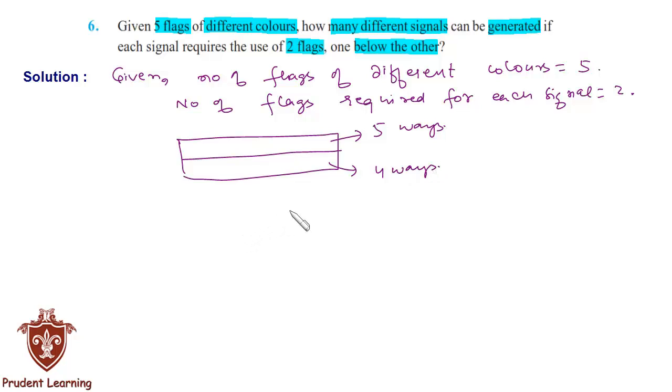Therefore, by fundamental principle of counting, the total number of different signals that can be generated is 5 into 4, that is 20.